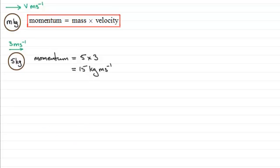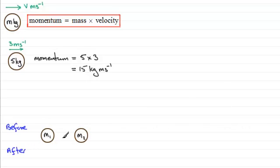Now consider two particles with masses m1 and m2. We look at their motion before they collide. Let's say m1 is moving with a speed of u1 to the right, and m2 is also moving to the right with a speed of u2. I'm assuming u1 is greater than u2, otherwise they won't collide.